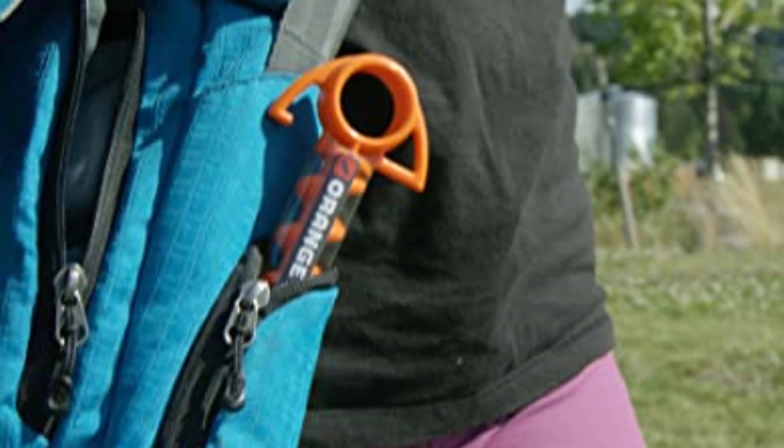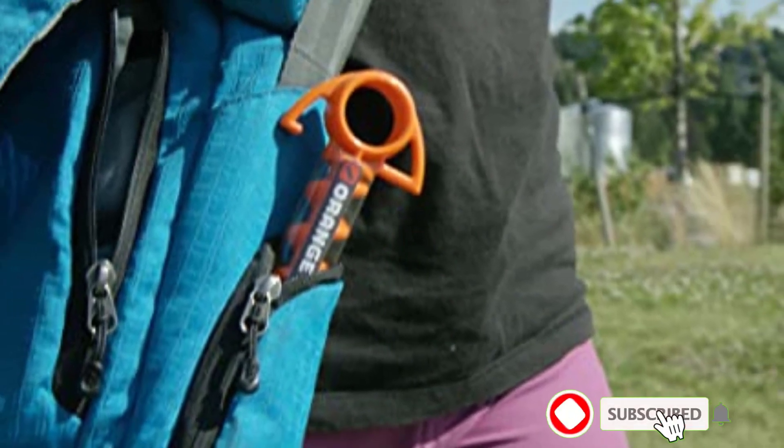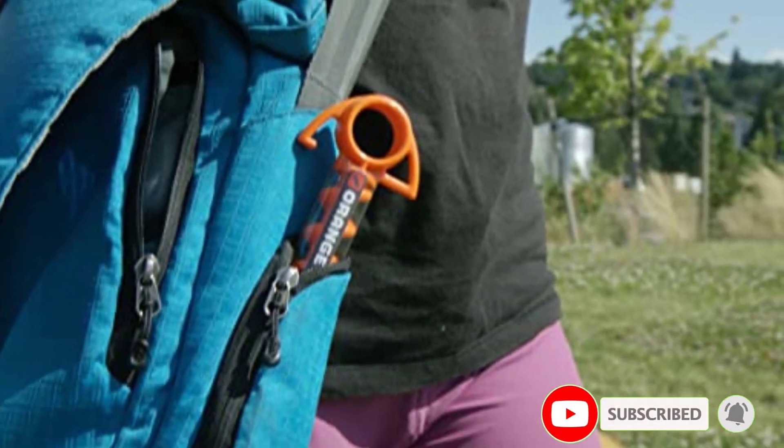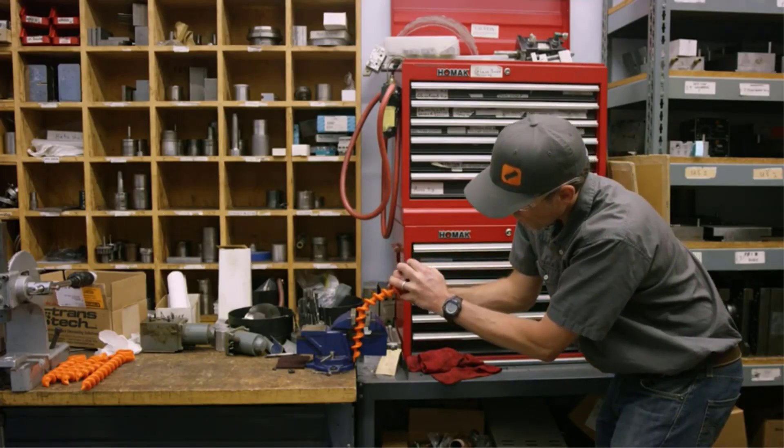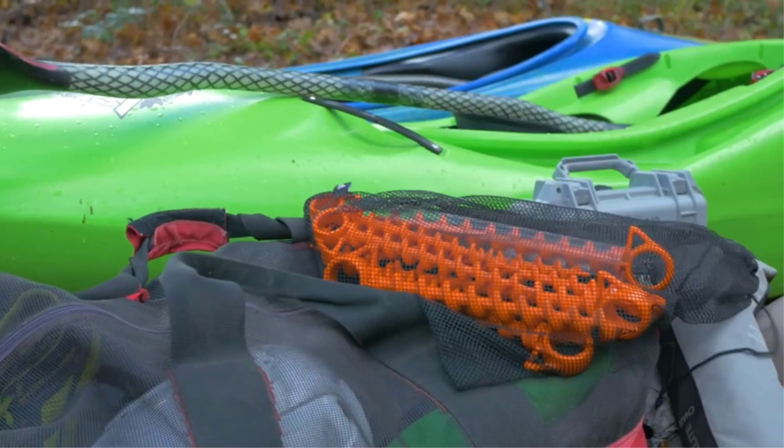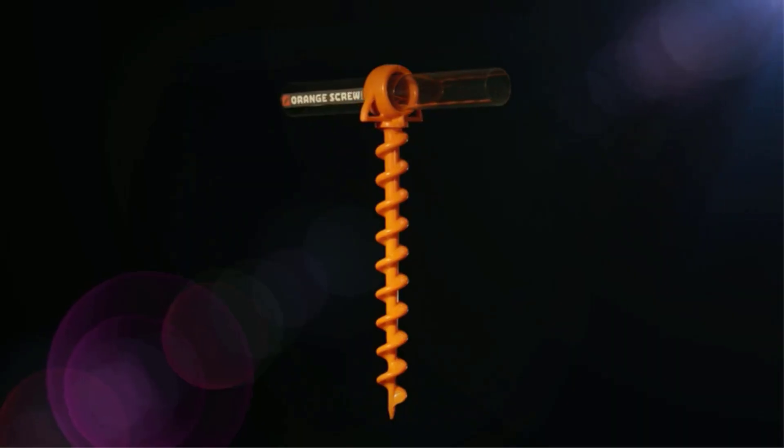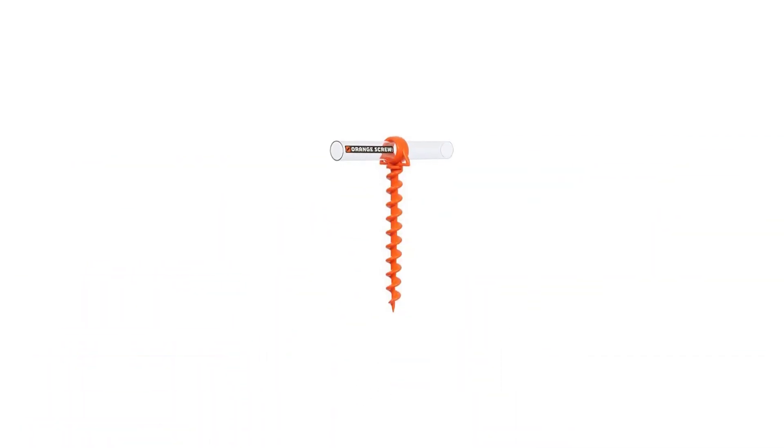Overall, the orange screw is a reliable and durable ground anchor that is perfect for anyone who loves spending time outdoors. Its simple design, durability, and ease of use make it a must-have for any camping or hiking trip. The 4-pack tent stakes are perfect for securing your tent or other outdoor equipment, ensuring that your outdoor adventure is safe and enjoyable. Highly recommended.